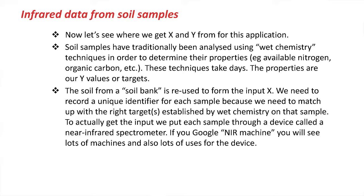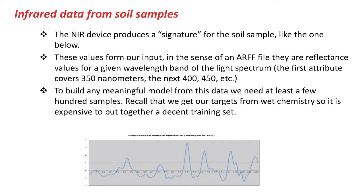We take a portion of each sample from a soil bank and divide it in half. We send one half to the wet chemistry lab to get the property determined, and with the other half we put it through a near-infrared device, which produces the X values for our input. The near-infrared device produces a signature for the soil sample, an example of which is shown on the slide.